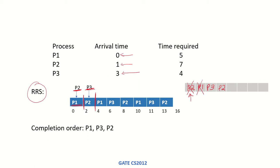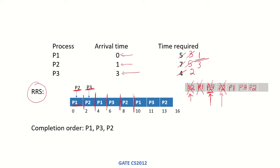At this point P1 has already run for 2 time units (1 remaining), and P2 has run for 2 time units (5 remaining). P1 runs from 4 to 6, leaving 1 time unit remaining. Next, P3 runs for 2 time units (2 remaining after that). Then P2 runs for 2 time units (3 remaining). Then P1 runs from 10 to 11 finishing off its last time unit and exits the system.